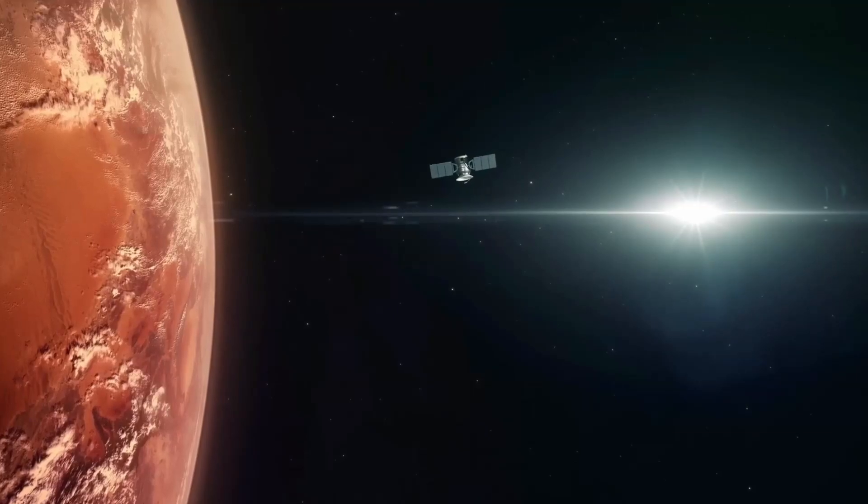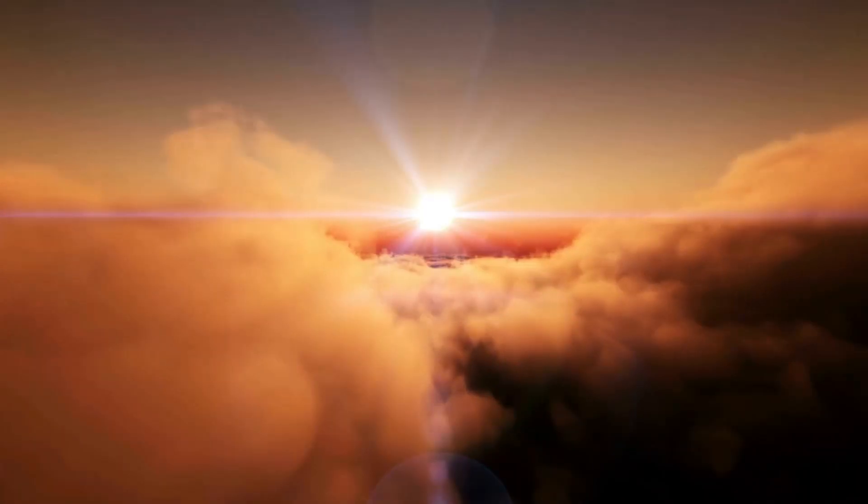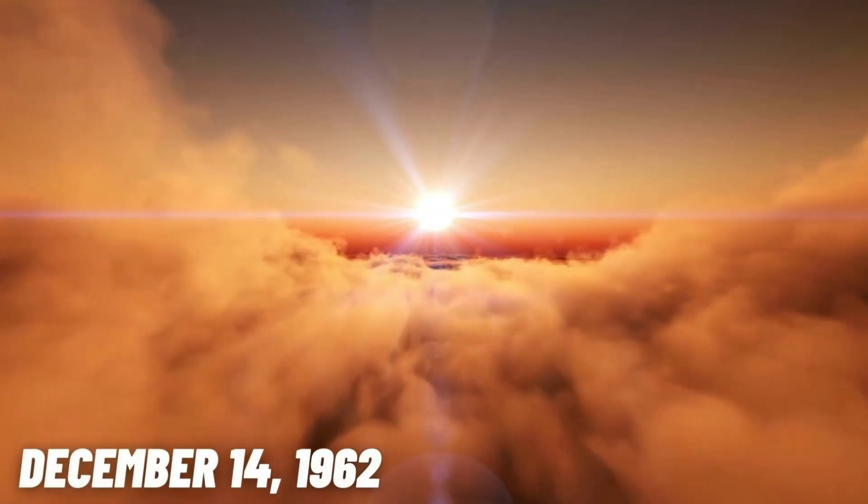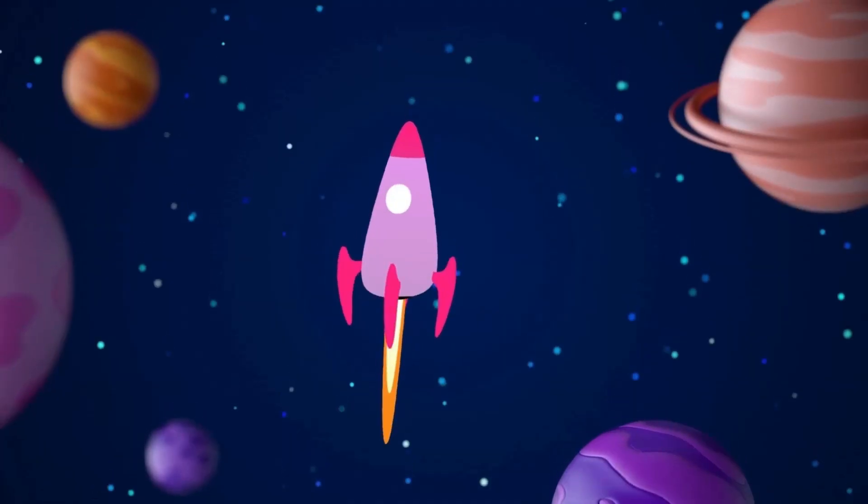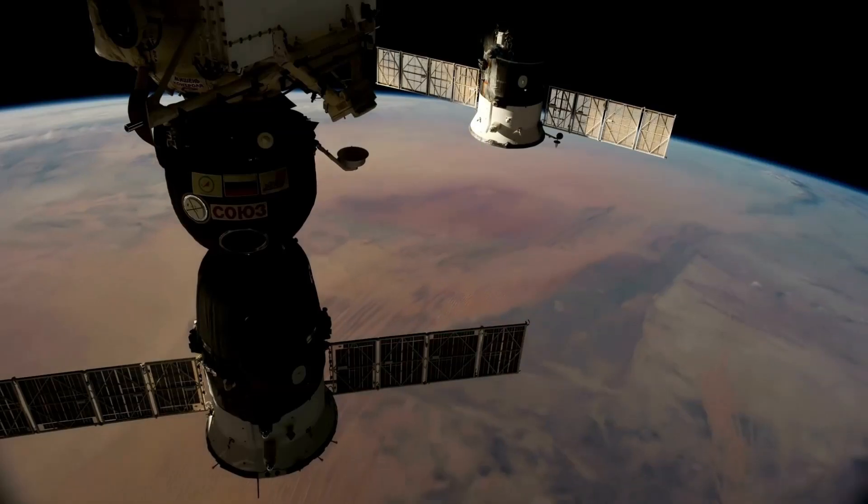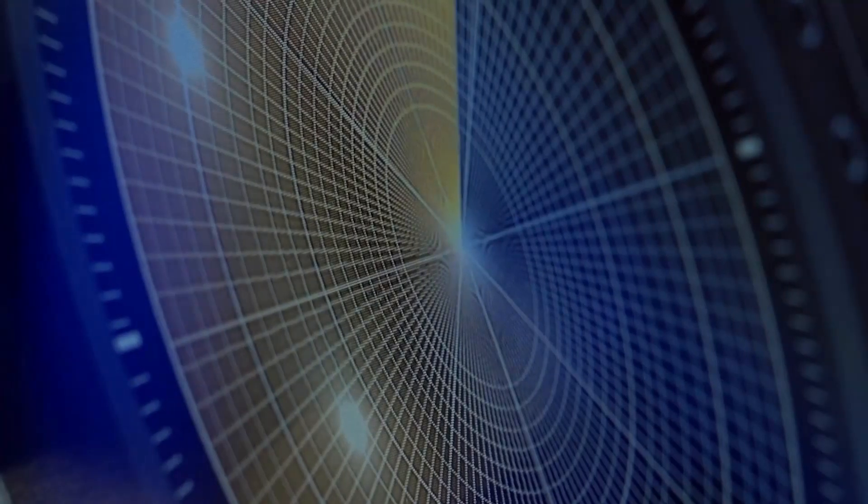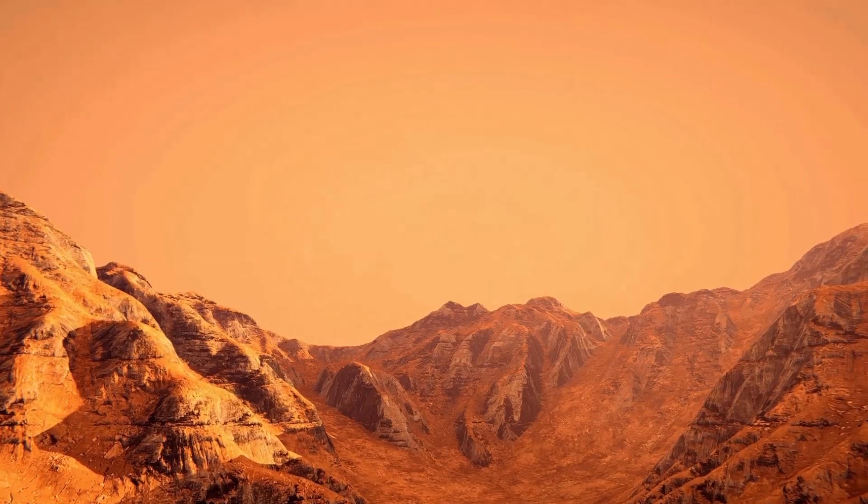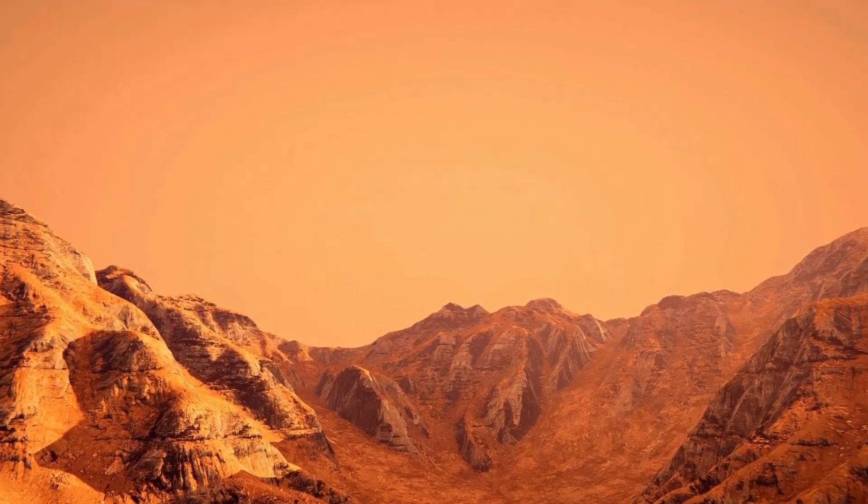When NASA's Mariner 2 successfully passed by and surveyed the cloud-covered world of Venus on December 14, 1962, it became the first spacecraft to visit a planet. Many spacecraft, such as NASA's Magellan, which use radar to analyze Venus's surface, have also been studying the hot planet.